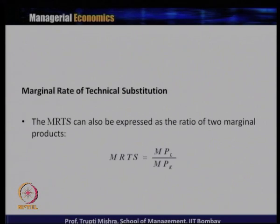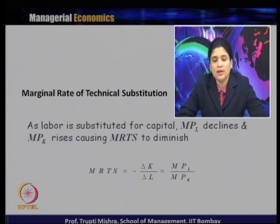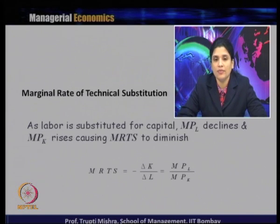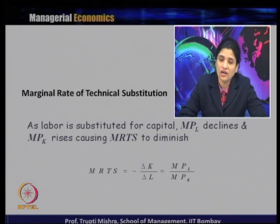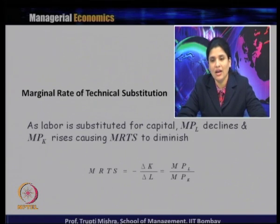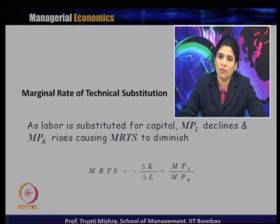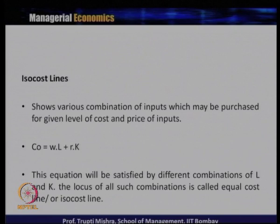The MRTS can also be expressed as the ratio of the marginal products of the two inputs: MRTS = MPL / MPK. As labor is substituted for capital, the marginal product of labor declines and the marginal product of capital increases, causing the MRTS to diminish. This confirms why a convex isoquant implies diminishing marginal rate of technical substitution.